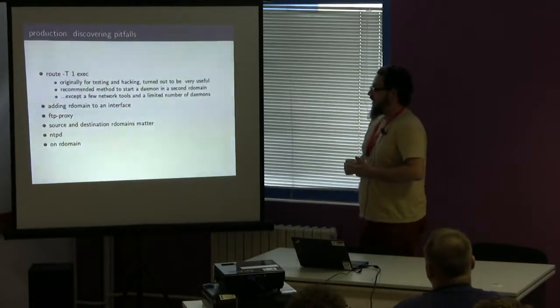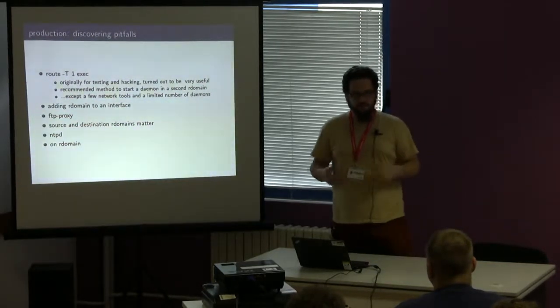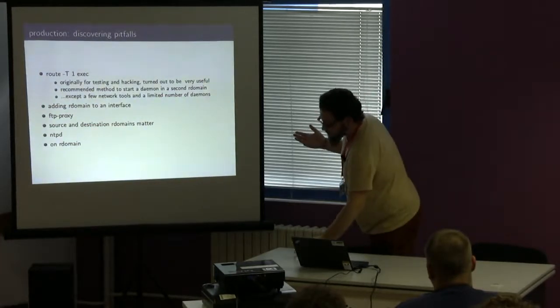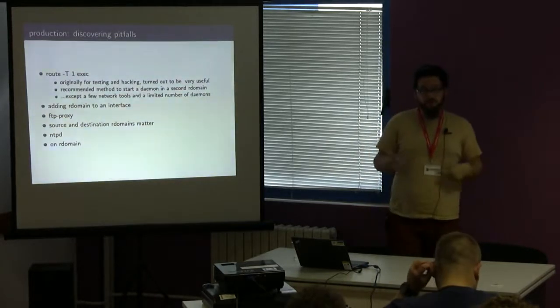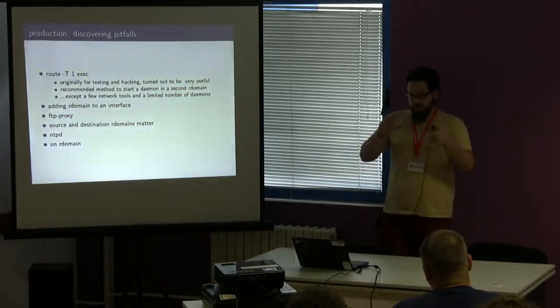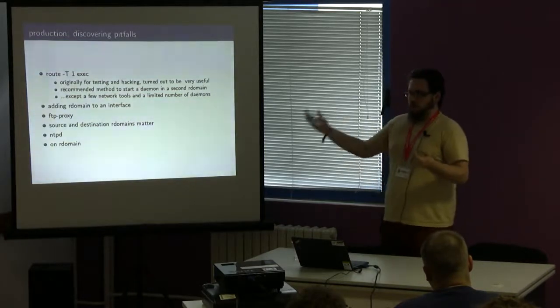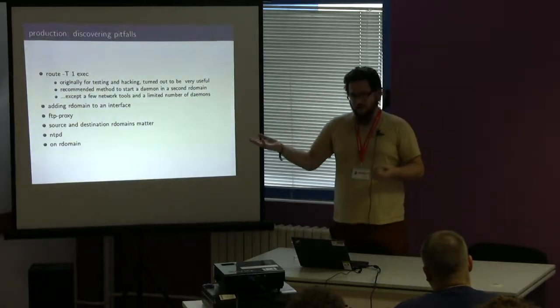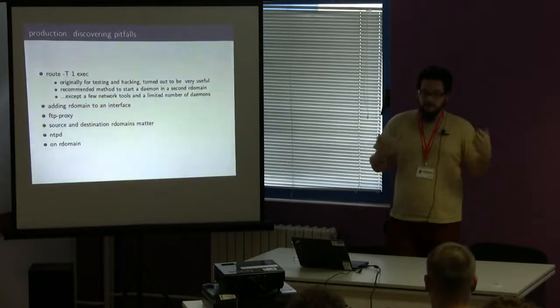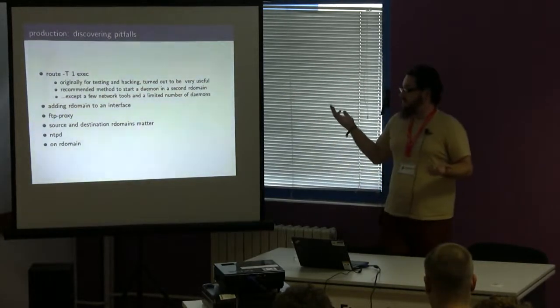As we put this into production, we discovered a lot of interesting things. The first one was the route exec. That was originally just a hack tool for us just to set up things and get it working really fast without having to add routing domain support to each of the individual daemons that we wanted to add to it. It turns out to be now the officially recommended way to start multiple services in this. When you have, for example, a web server listening on ports, it's bound normally to the default routing domain, routing domain zero. What if you also want it to listen on routing domain 20? Well, either you can use PF to take the traffic and send it across as necessary, or you can start up a completely second instance, possibly different configurations, possibly pointing to a different area, with the route exec.